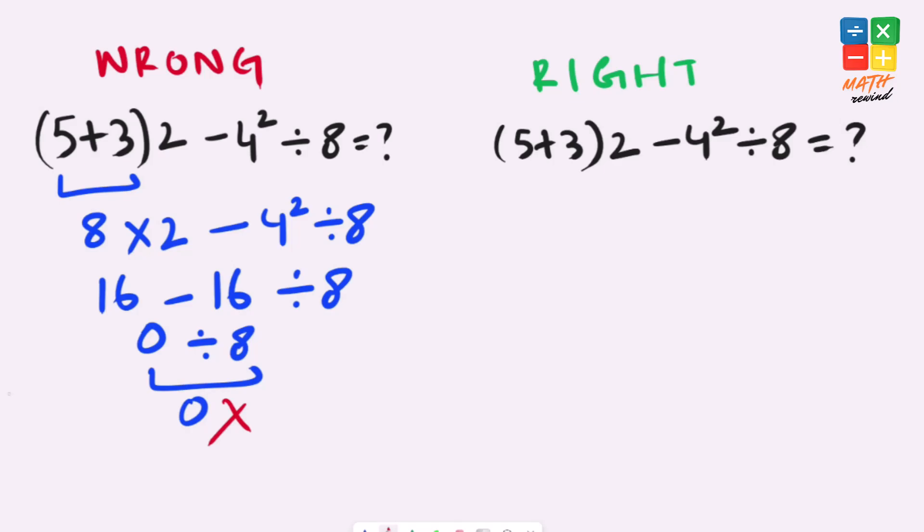Because according to the order of operations we must solve parenthesis first, then exponents, then multiplication and division and finally addition and subtraction. Remember if in an equation you have both multiplication and division present, you must work from left to right and same goes for addition and subtraction.